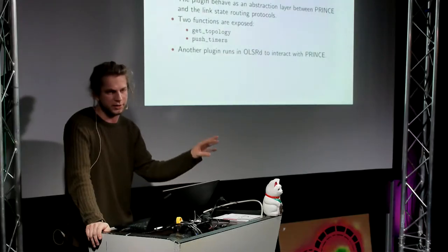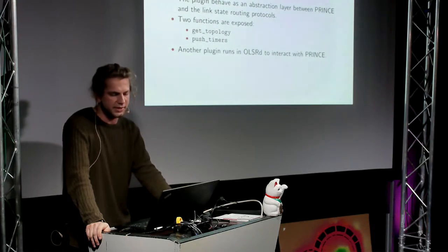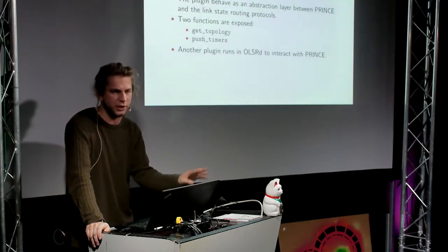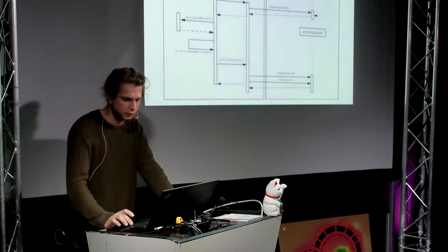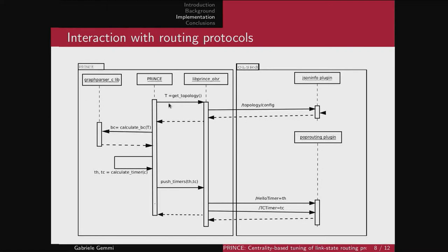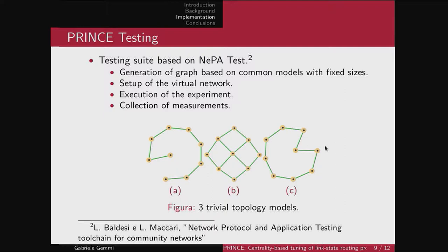For some routing protocols like OLSR, an additional plugin is needed because they cannot directly receive the timers, whereas for OLSRv2 everything is already built in. The interaction scheme is quite simple: it asks for topology using the JSON info plugin specific command for OLSR, calculates the centrality, calculates the timer, and pushes it back using a custom command. We tested it using NEPA test, which is a simulator for community networks — it creates Linux containers running Prince and OLSR, then connects them using a specified NetJSON graph.